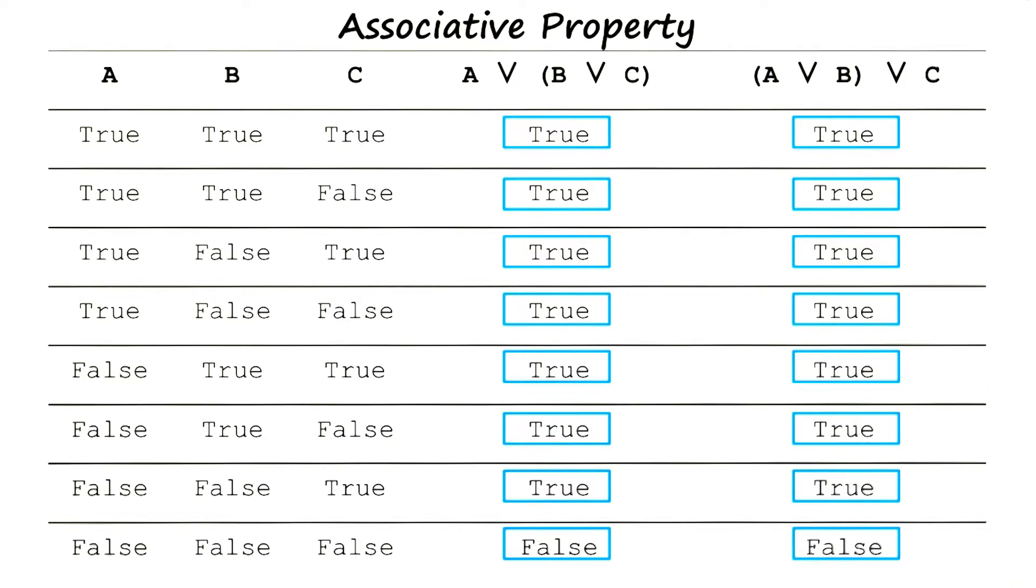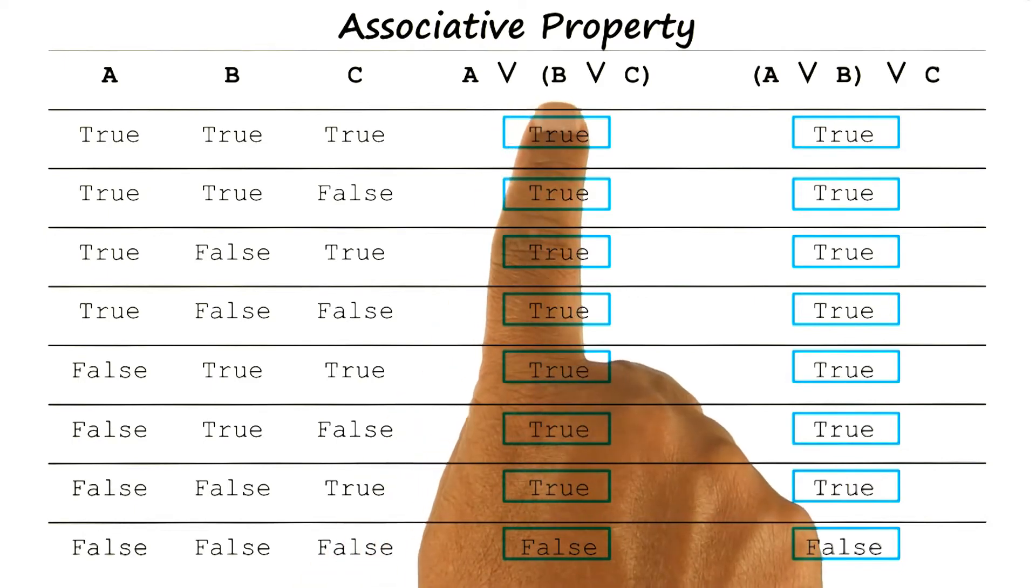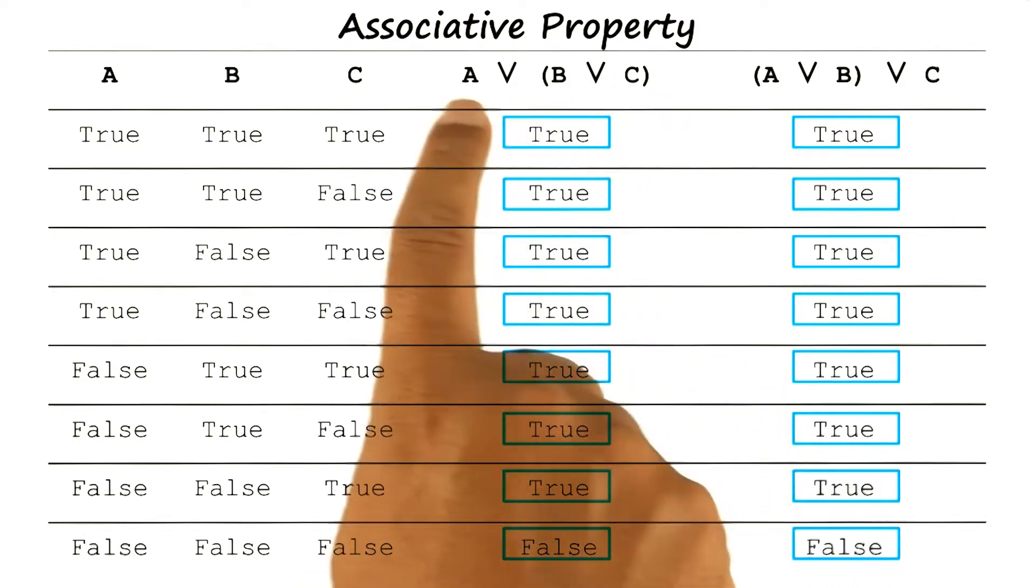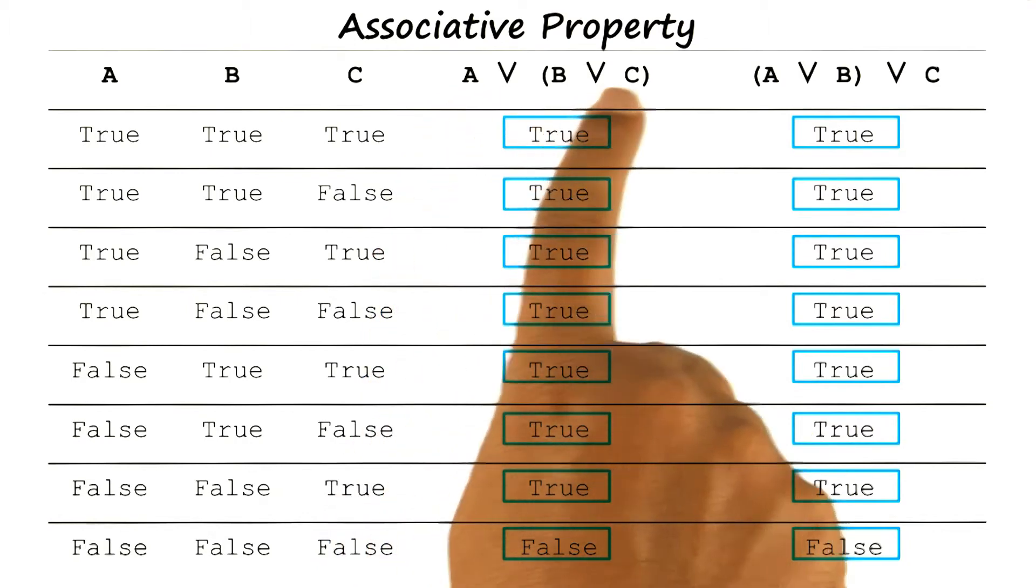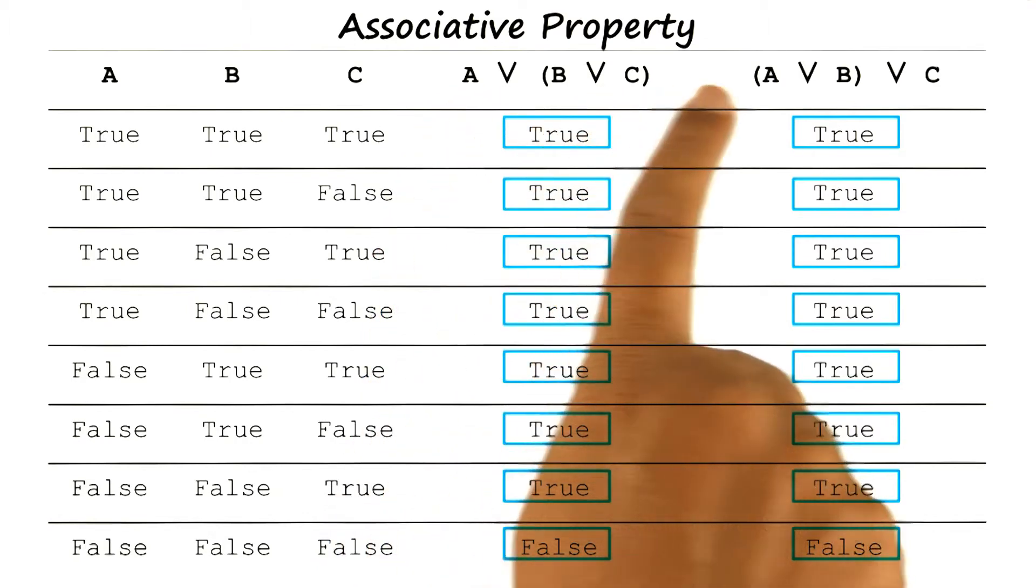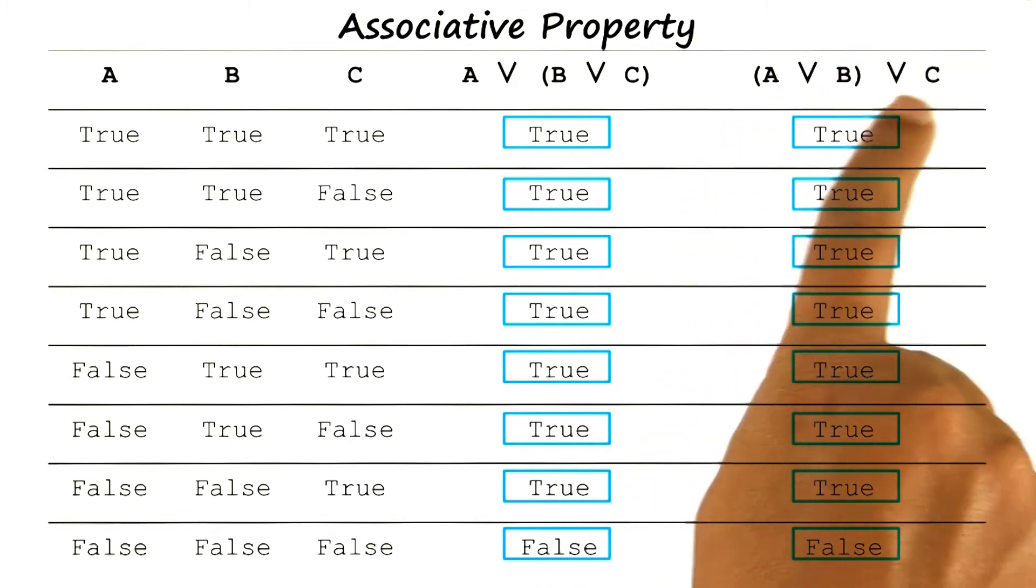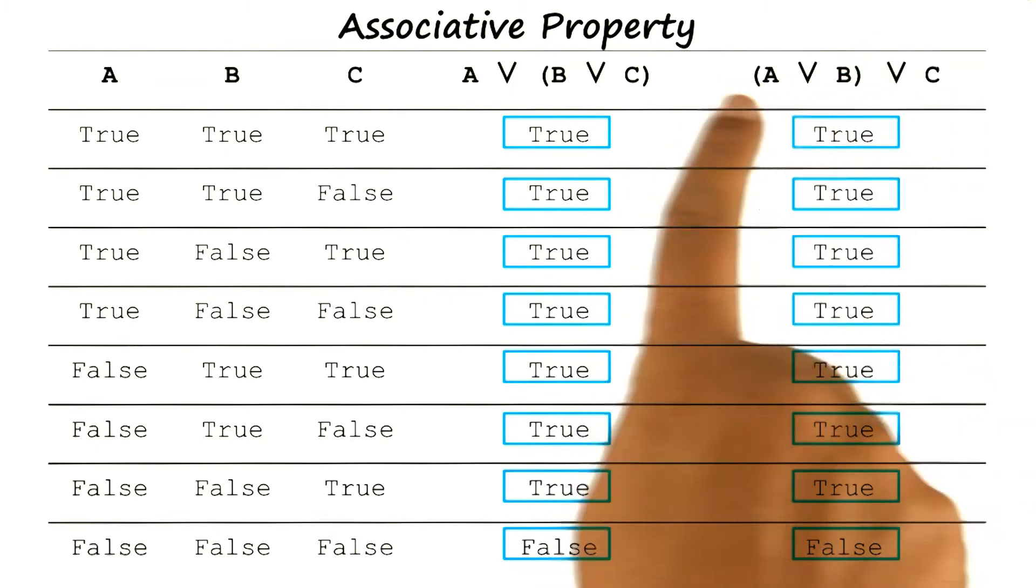That's good, David, and this property is called the associative property. The associative property simply says that we can change the location of the parentheses here. A or (B or C) has the same value as (A or B) or C, so that we can change the location of the parentheses.